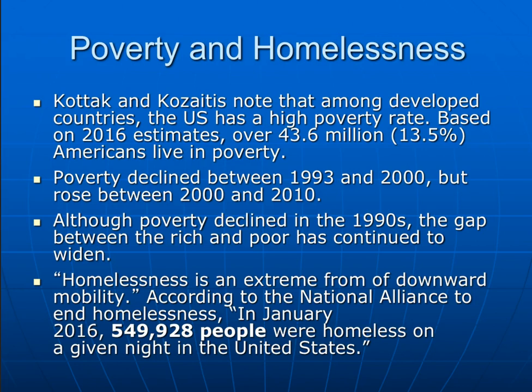Kotak and Kazaitis note that among developed countries, the U.S. has a high poverty rate. Based on 2016 estimates, over 43.6 million, or 13.5% of Americans, live in poverty. Poverty declined between 1993 and 2000 but rose between 2000 and 2010. Although poverty declined in the 1990s, the gap between the rich and poor has continued to widen. Homelessness is an extreme form of downward mobility — in January 2016, 549,928 people were homeless on a given night in the United States.